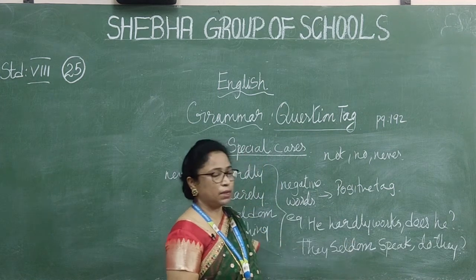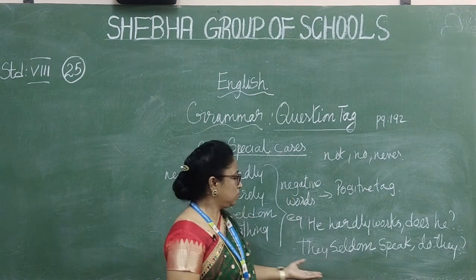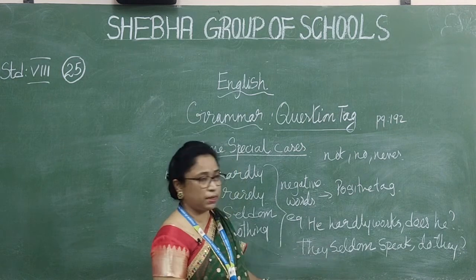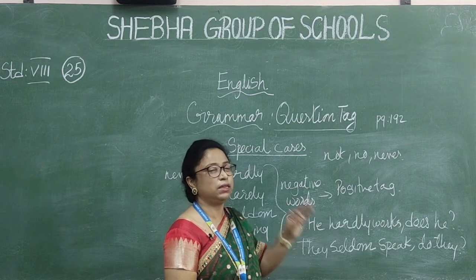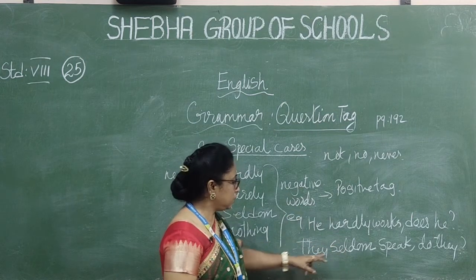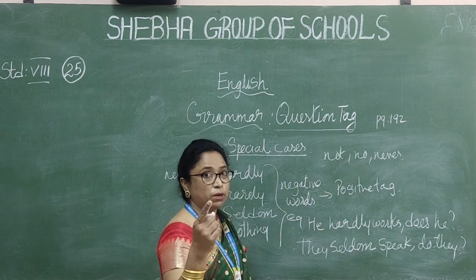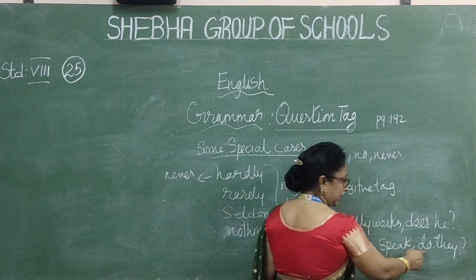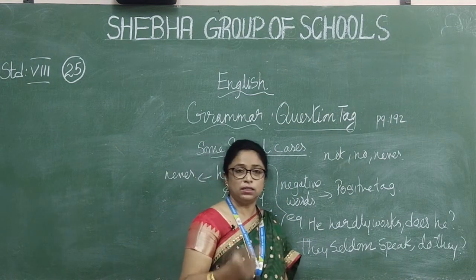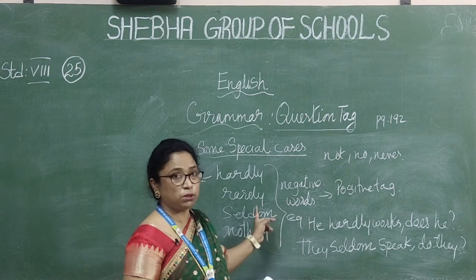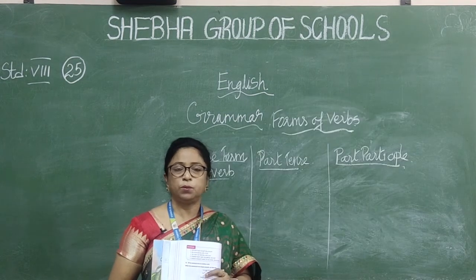Next: 'They seldom speak' — 'seldom' means very rarely, almost never, so it is a negative statement. Ask: 'How do they speak?' — that gives you 'do'. The pronoun is 'they'. Answer: 'They seldom speak, do they?' These special negative words must be learned so you can identify the correct tag.